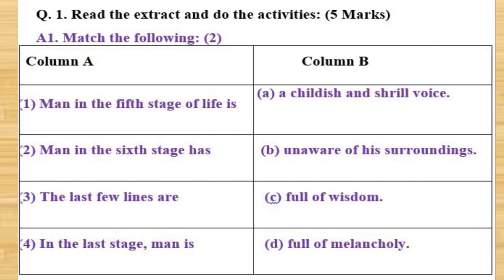A1: Match the following. Column A with Column B. Column A: 1. Man in the fifth stage of life is. 2. Man in the sixth stage has. 3. The last few lines are. 4. In the last stage man is. Column B: A. A childish and shrill voice. B. Unaware of his surroundings. C. Full of wisdom. D. Full of melancholy.